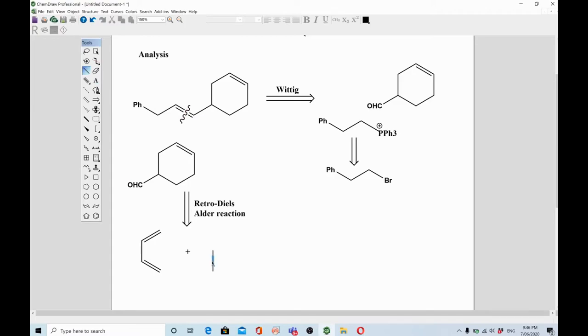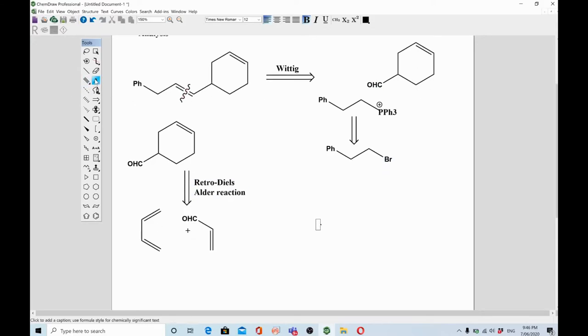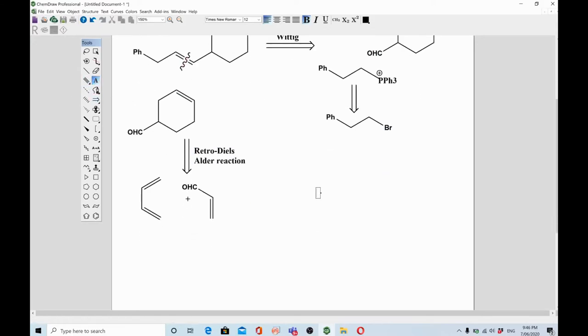So this is the retrosynthetic analysis for this compound. First one is Wittig, then converting Wittig into alkyl halide, and you can convert this ring into these simple molecules. You can start synthesis from these.